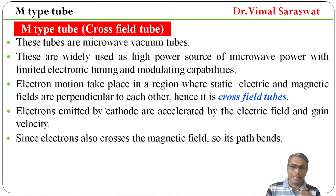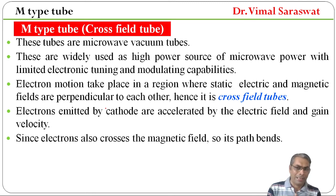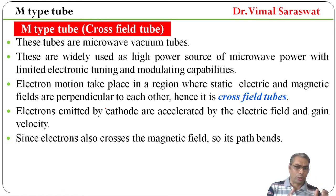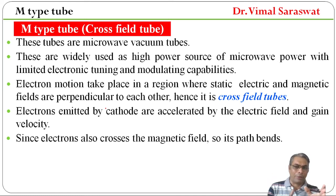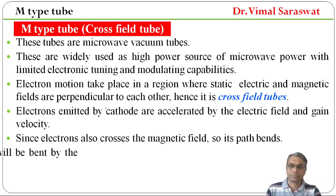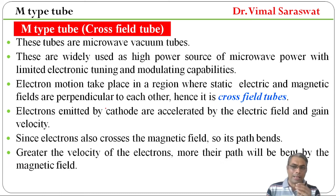Since the electron also crosses the magnetic field, its path bends. Greater the velocity of electrons, more their path will be bent by the magnetic field.